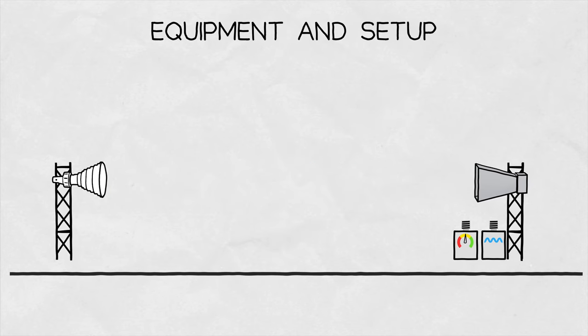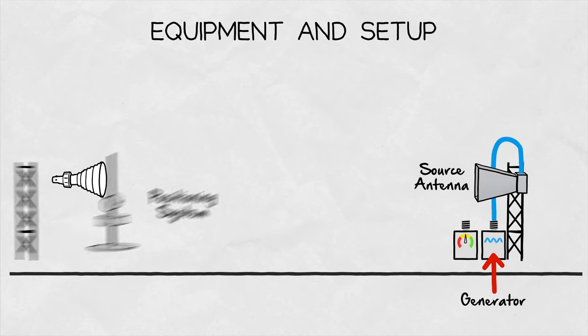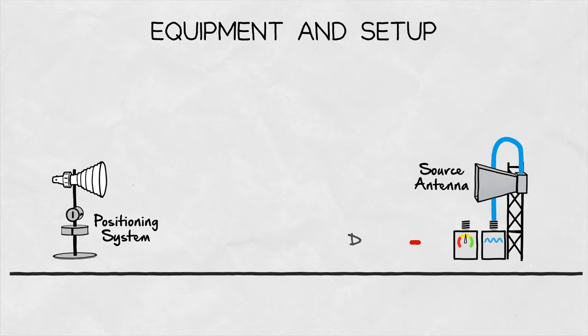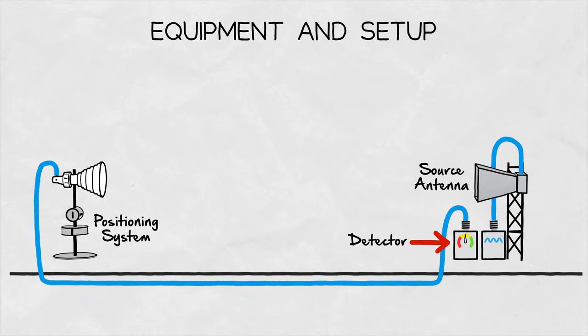As is the case when measuring antenna gain, we need specialized equipment. A signal generator connected to a source antenna, a positioning system to precisely aim the antenna being measured in various directions which is connected to a signal detector.